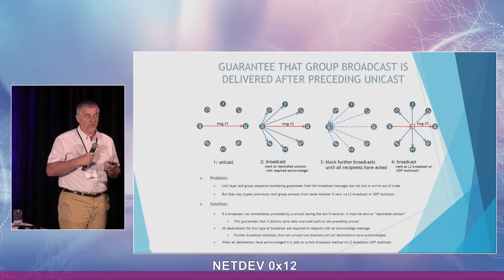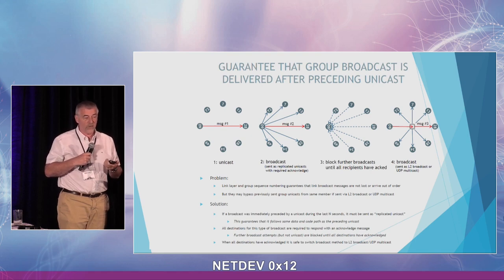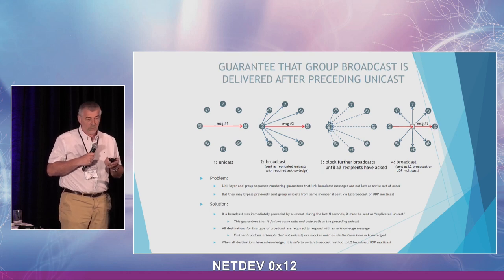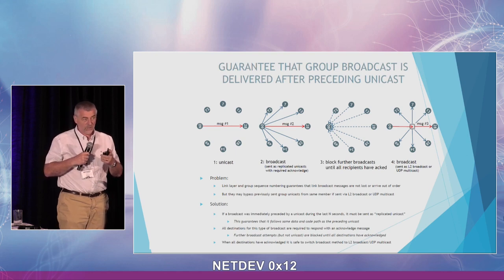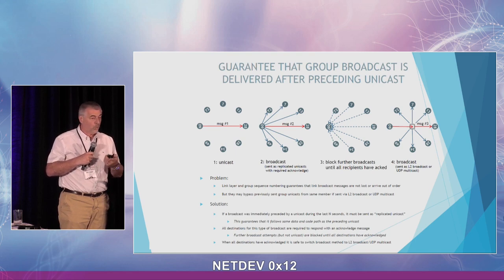We don't want to be permanently forced to send broadcasts as replicated unicasts. The solution: replicated broadcast packets contain a bit requesting an acknowledgment. The sender stops and waits for acknowledges from all known destinations. Once all acknowledges are received, it is free to choose the broadcast algorithm — true broadcast, multicast, or replicated broadcast — as it sees fit.